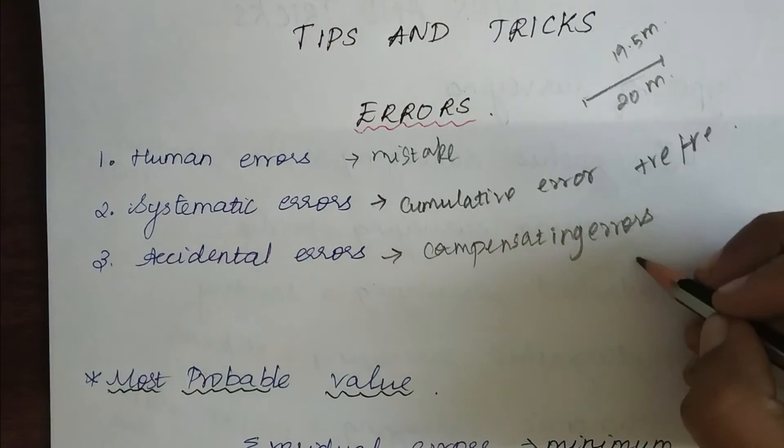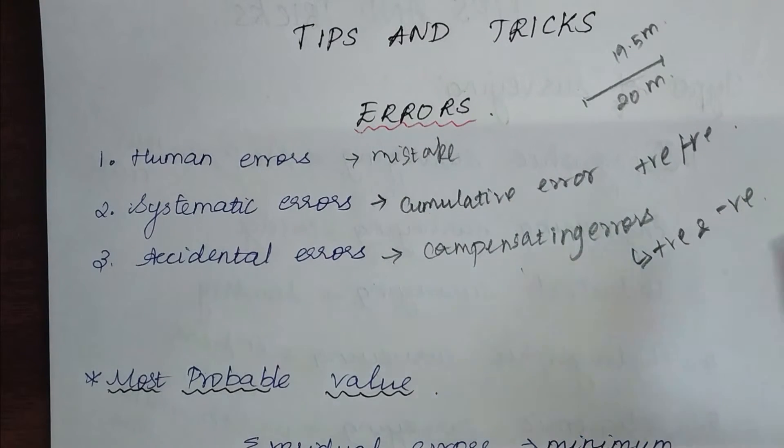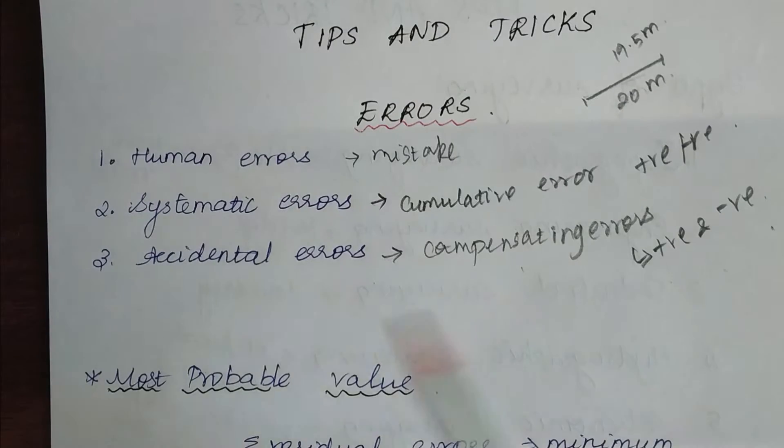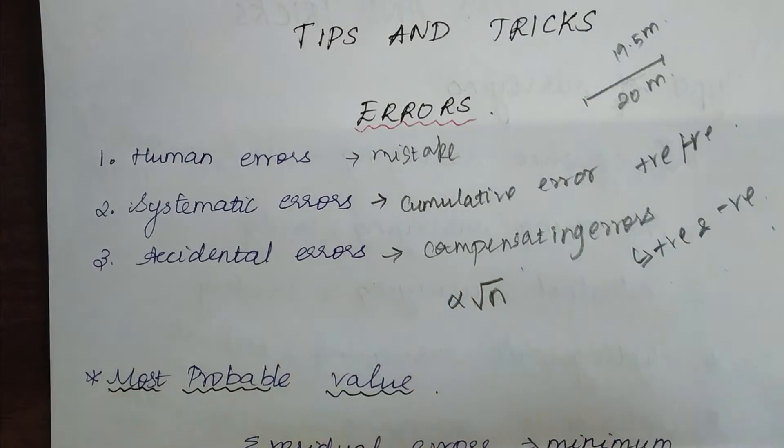Compensating errors are both positive and negative. As the name suggests, they tend to compensate each other. Accidental errors are directly proportional to the number of observations that have been taken.